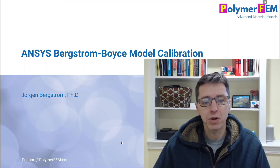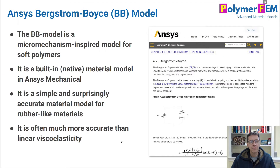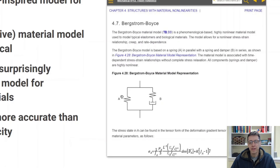The BB model has two parallel networks, and you can see a rheological representation of the model here and a screenshot of the ANSYS documentation for it. This is a model that I developed a number of years ago during my PhD work. It was developed for elastomer-like materials, but you can still apply it for other polymers — it works particularly well for softer polymers.